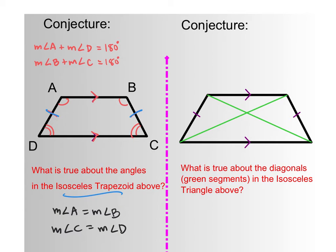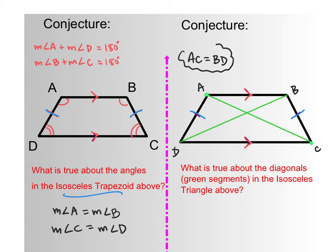Another property within the isosceles trapezoid: we've got a trapezoid with non-base sides congruent, and these green lengths are diagonals. The diagonal from A to C and the diagonal from B to D are equal in length — the distance from A to C equals the distance from B to D. That's a very interesting property we can utilize within the trapezoid.